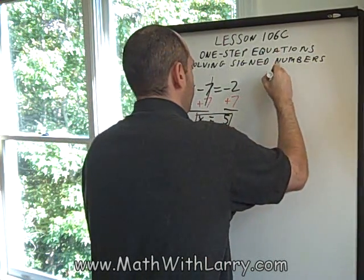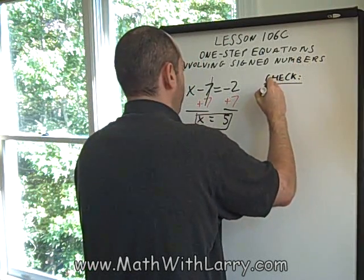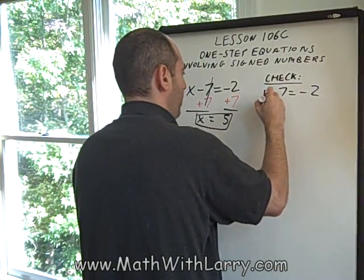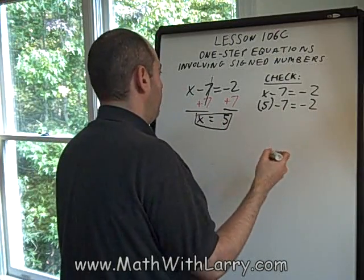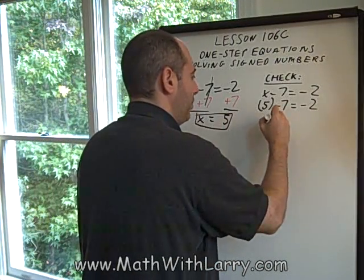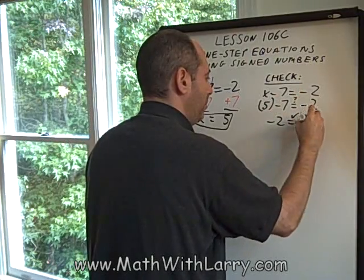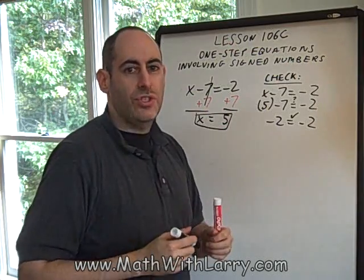We'll do a fast check. So, I'll substitute what I think is the correct answer. 5 minus 7. Does that equal negative 2? Yes, it does. Negative 2 equals negative 2. So, that shows that 5 is the correct answer. Okay, for this next exercise, I'd like to do a multiplication problem.